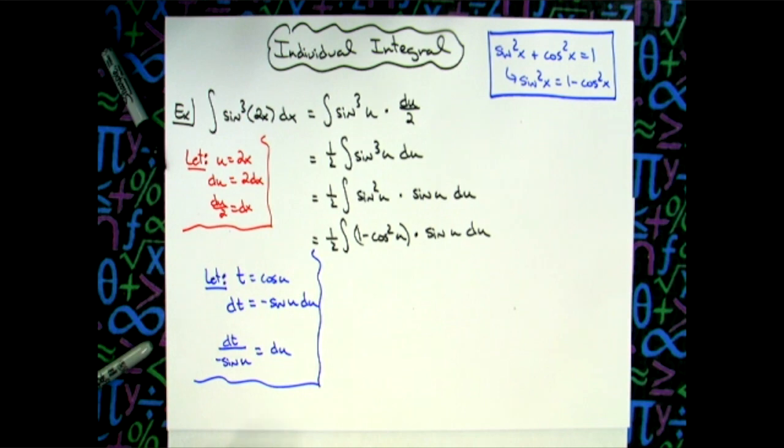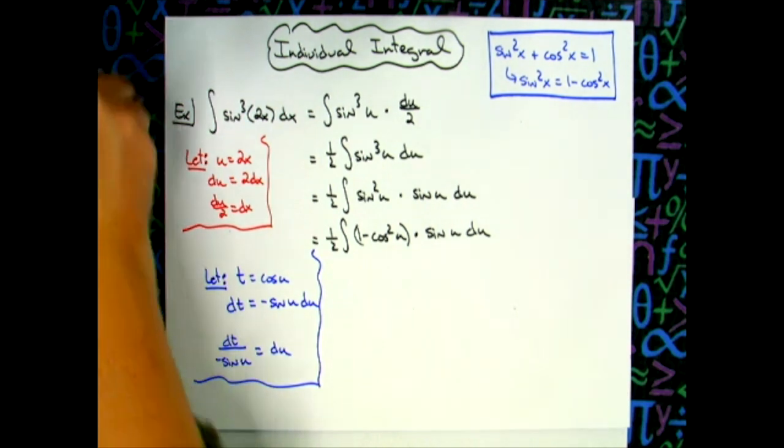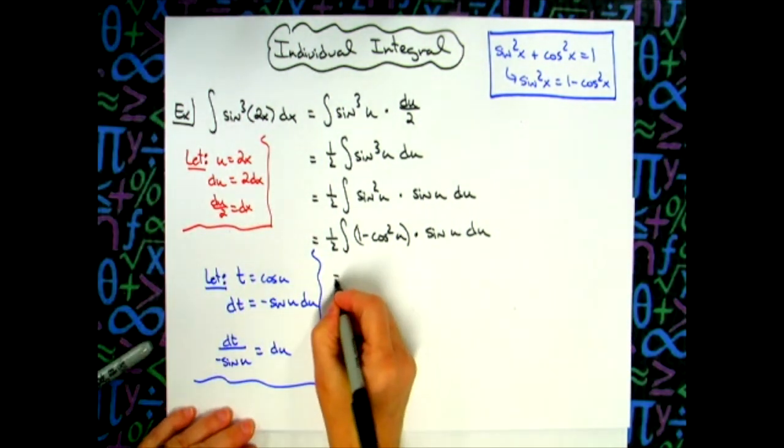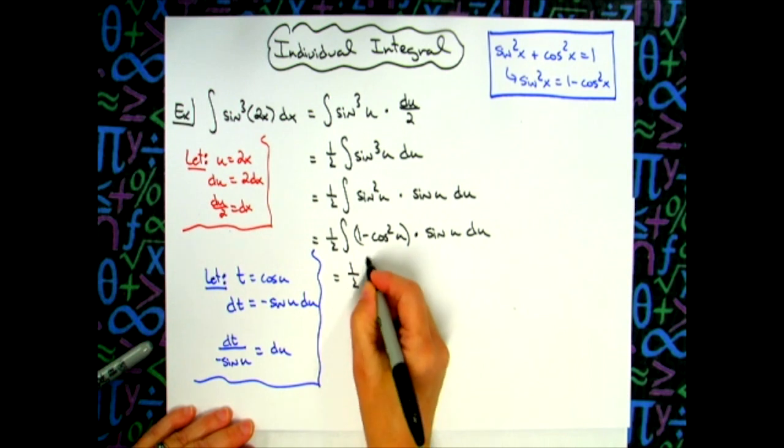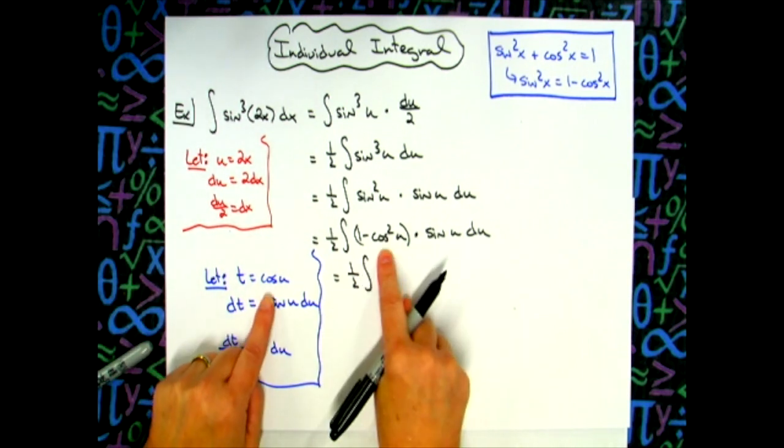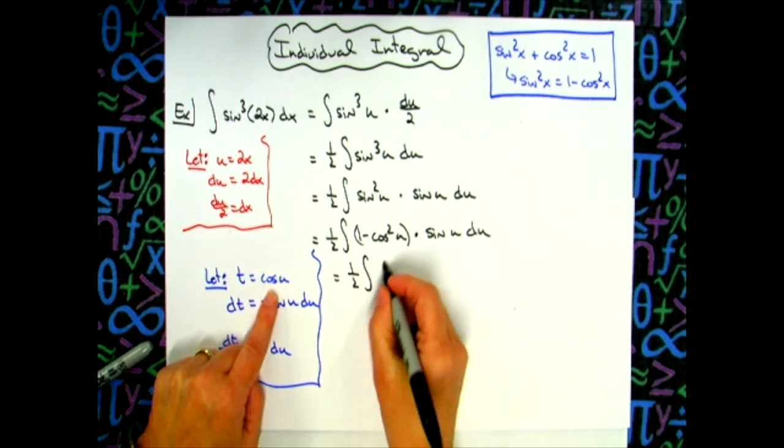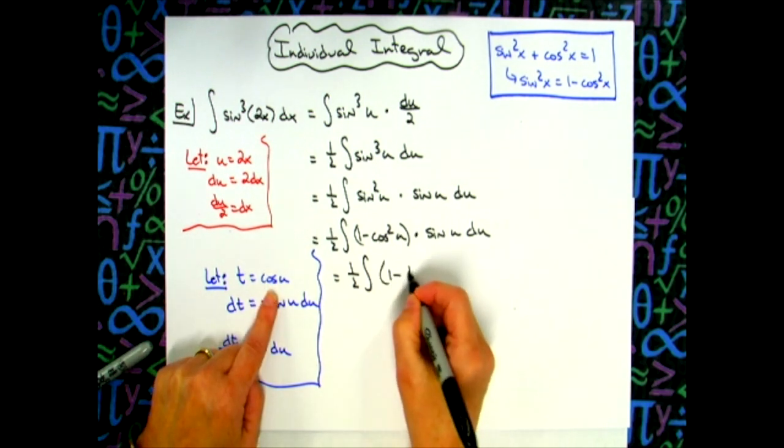We're going to come back up then to this integral and do some substitutions. So I'll still have my one half, an integral. I'm going to replace my cosine here with a t, so I'll have one minus t squared.